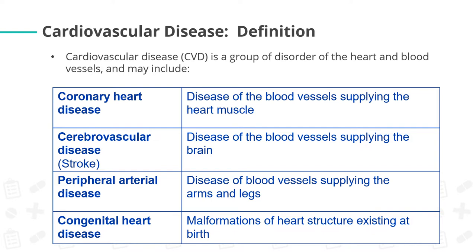Cardiovascular disease is a group of disorders of the heart and blood vessels and may include coronary heart disease — a disease of the blood vessels supplying the heart muscle — cerebrovascular disease or stroke, which is a disease of the blood vessels supplying the brain, peripheral arterial disease — a disease of the blood vessels supplying the arms and legs — and congenital heart disease, which refers to malformations of heart structure existing at birth.